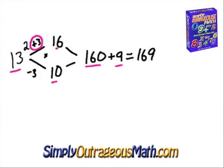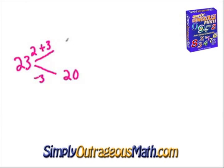We will do another one to make sure you have the hang of it. In this case we are going to square the number 23. So 23 squared. 23 is close to 20, so we will go here. To get to 20 we actually subtracted 3. And if we subtract 3 here we have to add 3 up here. So that would make this number 26.